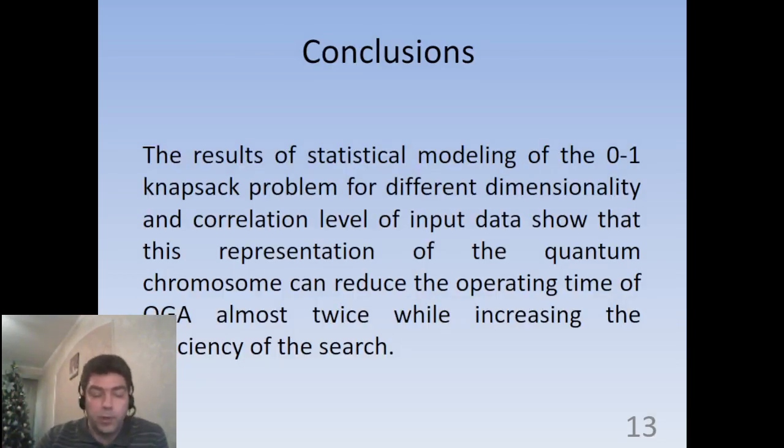So the conclusions are as follows. The results of statistical modeling of the 0-1 knapsack problem for different dimensionalities and different correlation levels of the input data show that this representation, the multilevel quantum representation of the chromosome, can significantly reduce the operation time of quantum genetic algorithms, according to our results almost twice, while increasing the efficiency of the search.